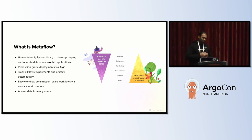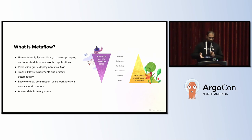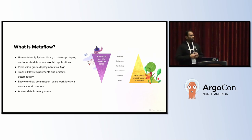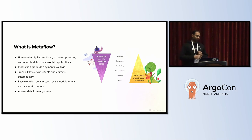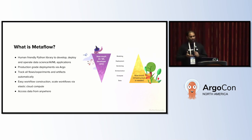The data scientist persona cares about things like modeling, deployment, and versioning — more so than data, compute, or orchestration. Modeling essentially means you want to be able to pull out any library you find on the web — it might be scikit-learn, xgboost, or whatever. Bring your favorite library and use it to create flows that allow you to build value out of your AI or ML applications.